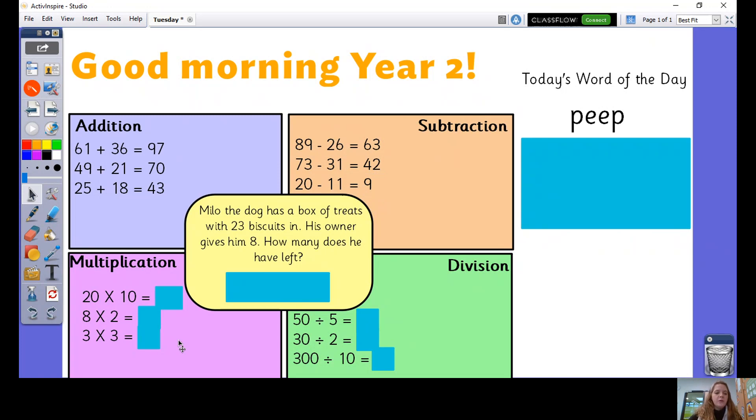Multiplication. This first one was a difficult one. 20 multiplied by 10, so that's 20 groups of 10, that equals 200. 8 multiplied by 2 equals 16, and 3 multiplied by 3 equals 9.